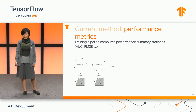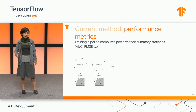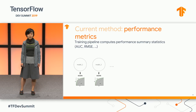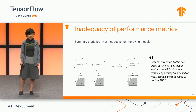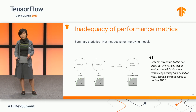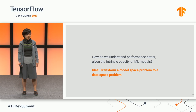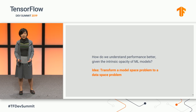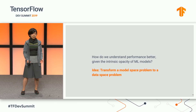Traditionally, the only guidance for model developers to evaluate model performance is by looking at performance metrics. Although these metrics are useful, they do not give too much insight into how to improve the model or why a model performs in a certain way. Given the intrinsic complexity of machine learning algorithms, it is very hard to understand model performance. So how do we solve the problem?